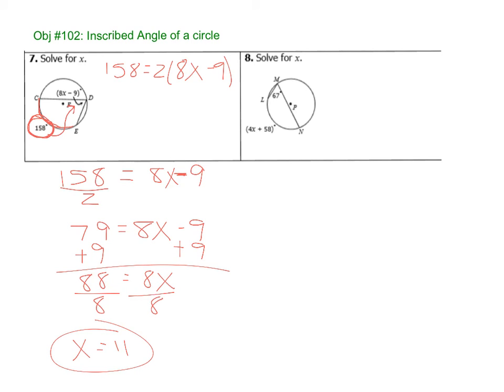Alright, same idea. Pause the video. So again, there are two options. I take the number and I change the number. So I'm given 67 degrees as my angle. So to turn an angle into an arc, we're going to do times 2. So 134, 14, carry the 1, yep. So 134 equals 4x plus 58. So I did 2 times 67.